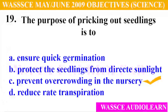Question 19: The purpose of pricking out seedlings is to — A. Ensure quick germination, B. Protect the seedlings from direct sunlight, C. Prevent overcrowding in the nursery, D. Reduce rate of transpiration. And the answer is C, prevent overcrowding in the nursery.